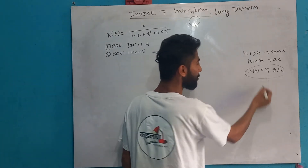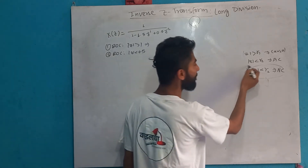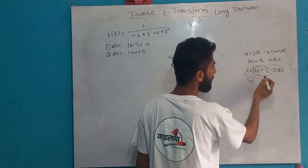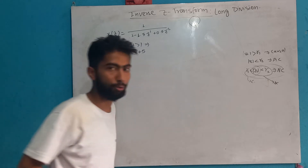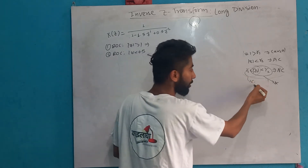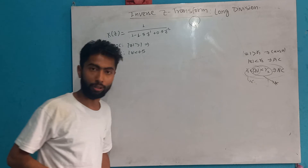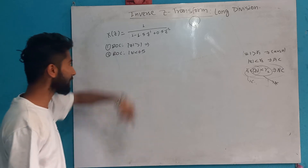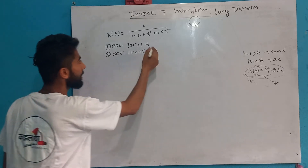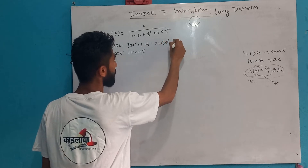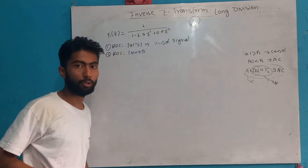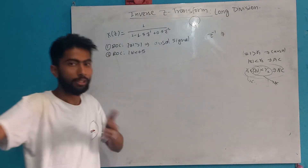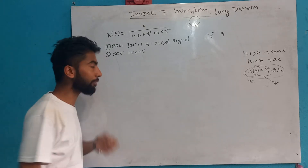The non-causal signal is basically: Z greater than R1 gives a causal signal, and Z less than R2 gives an anti-causal signal. So we will handle the causal signal case using long division, and we will get the causal signal in Z-inverse form.